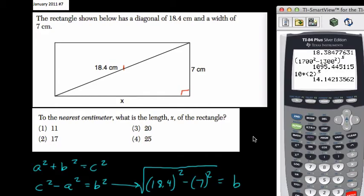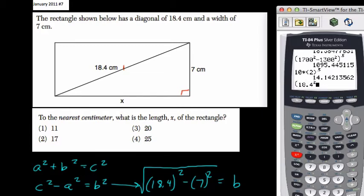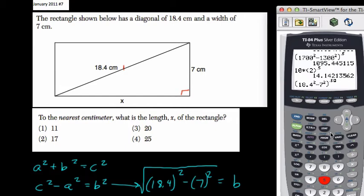I'm going to enter that all into my calculator at once, so we have, I'm going to start parentheses here. And in those parentheses, 18.4 squared - here's a square button, right - minus 7 squared, close parentheses. I raise it to the half power; that's the same thing as using the square root, which we're doing here.